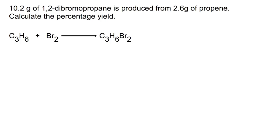We'll start by looking at an example. This example produced 10.2 grams of 1,2-dibromopropane from 2.6 grams of propene.